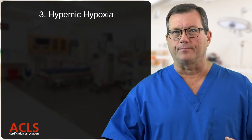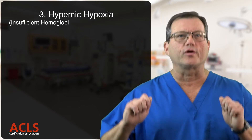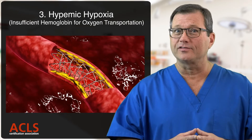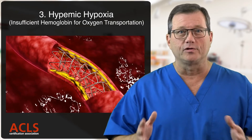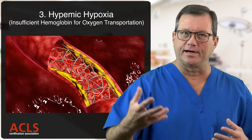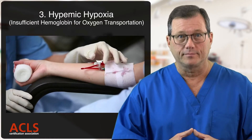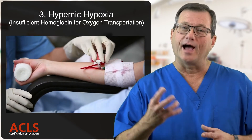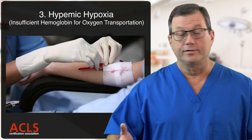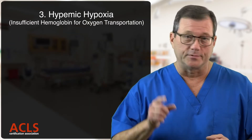Next up, hyphemic hypoxia. In this case, the patient has lost the necessary amount of hemoglobin to transport oxygen effectively through the body. This is caused by bleeding — absolute blood loss. They have lost the red blood cells and the hemoglobin to carry the oxygen through the body. The treatment? Blood. Give them blood — they need oxygen-carrying capacity. In the field, what are we giving them? 0.9 normal saline — just to keep their blood pressure up, but 0.9 won't carry oxygen. This patient needs blood.